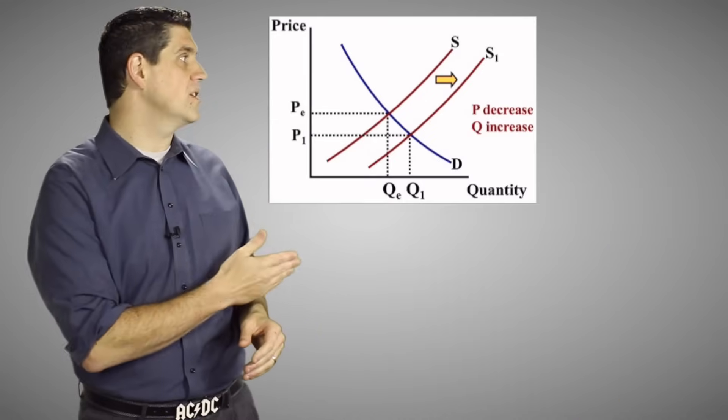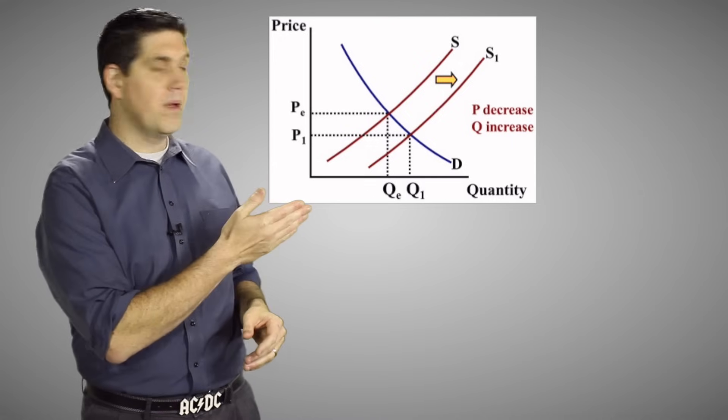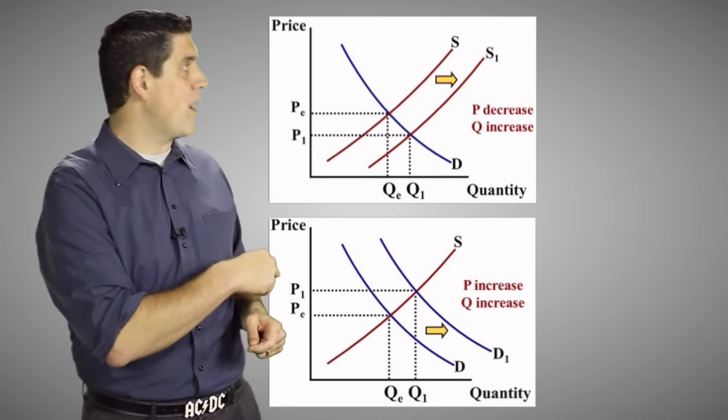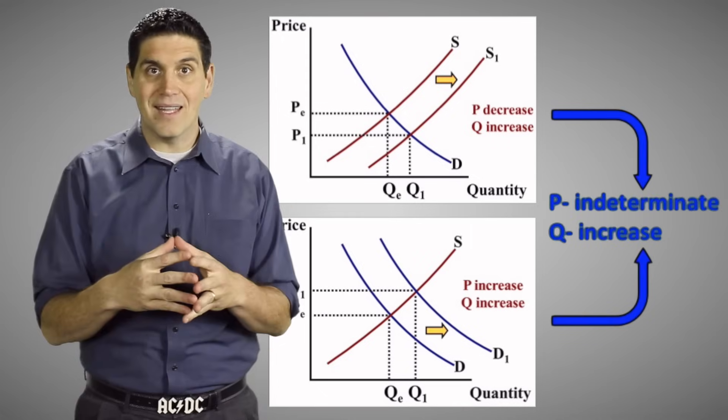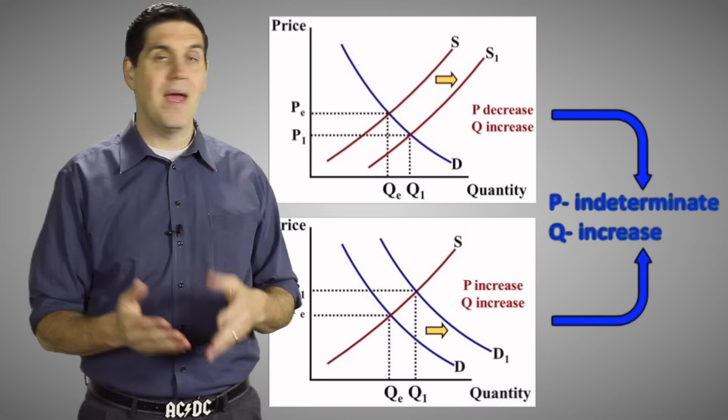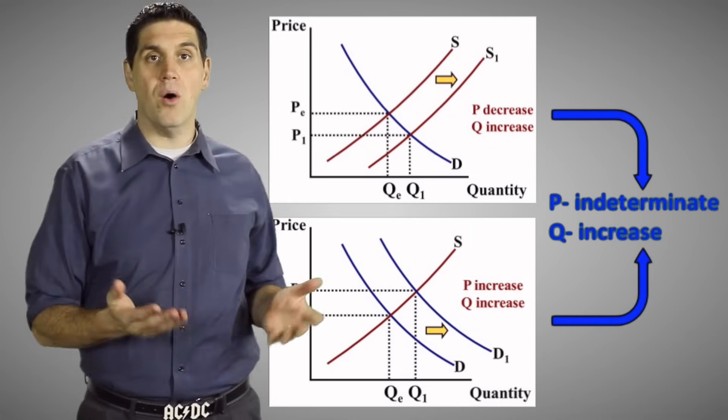So an increase in supply causes the price to go down and the quantity to go up. And an increase in demand causes the price to go up and the quantity to go up. When you combine that together, the quantity definitely goes up. And the price, well, you don't know. It's indeterminate.